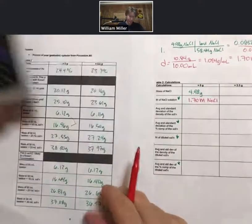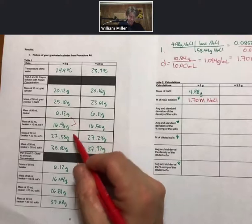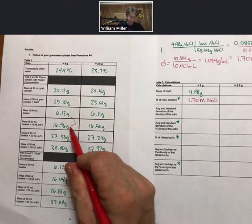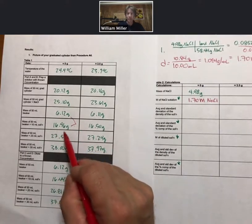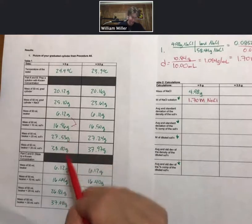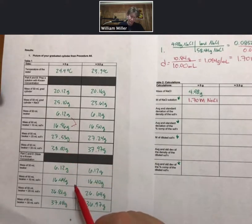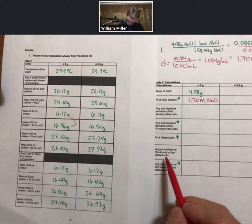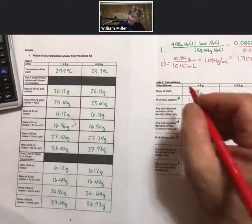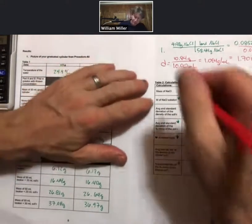And you can do that for each of the 10 milliliters, subtracting the one before it. So 27.53 minus 16.96, et cetera. But then we're also going to need to do the percent composition.